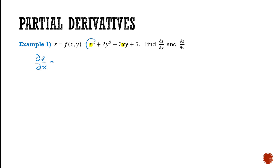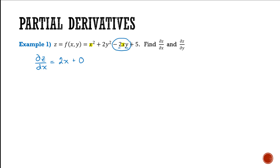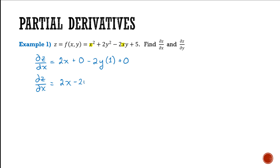Looking at the first term, the derivative of x squared would be 2x. Then we have 2y squared — remember, y is going to be treated like a constant, like the number 100 or something like that, so this value is a constant and the derivative of a constant is 0. Next, we look at negative 2xy — negative 2 and y are going to be treated like a constant, and the derivative of x alone is 1. Finally, the derivative of 5 is 0. Simplifying, di z by di x is equal to 2x minus 2y, and that is the final answer for the partial derivative of z with respect to x.